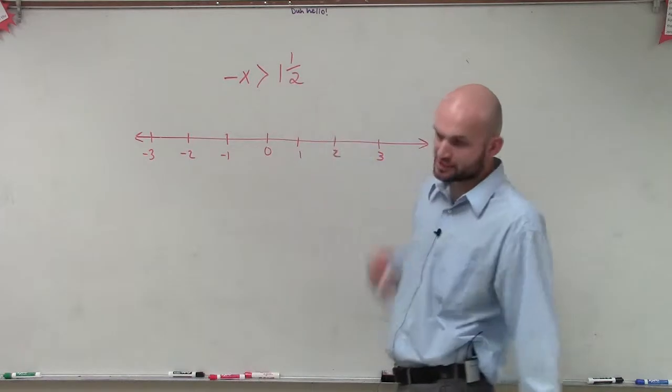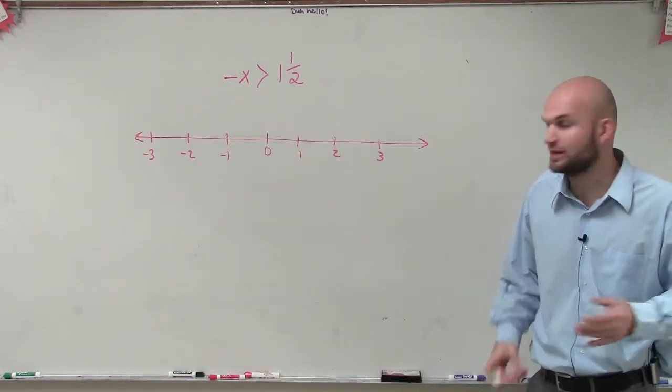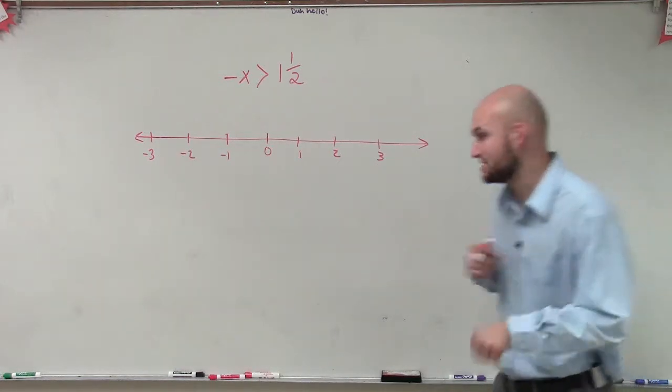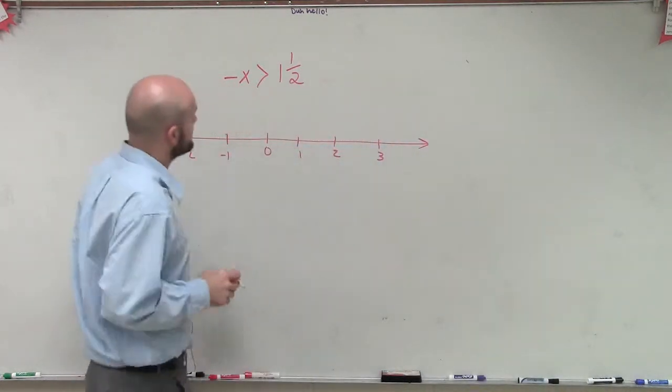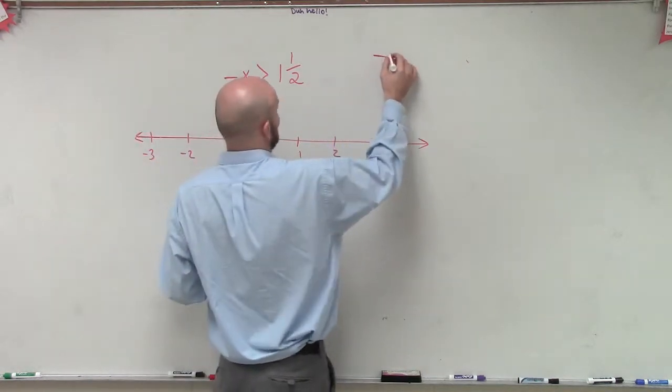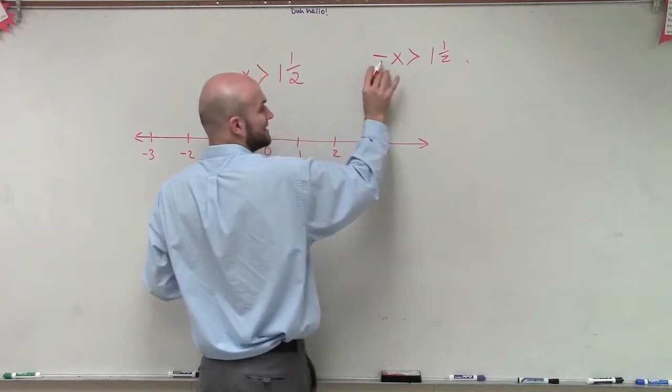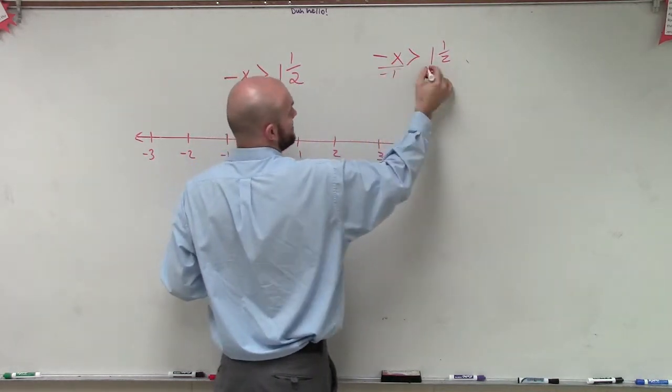The main important thing is we need to isolate the variable, and when doing this, that comes up to an important property of an inequality. To solve this, we obviously know we have to solve for x. If I have negative x greater than 1 and 1 half, I need to get rid of this negative sign, so I'm going to divide by negative 1.